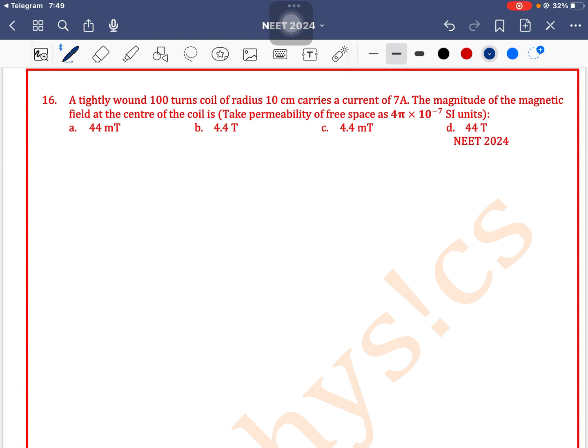NEET 2024 question: A tightly wound 100 turns coil of radius 10 centimeters carries a current of 7 amperes. The magnitude of magnetic field at the center of the coil is—we know that the magnitude of magnetic field at the center of the coil is μ₀NI divided by 2R.